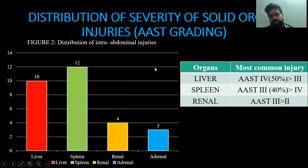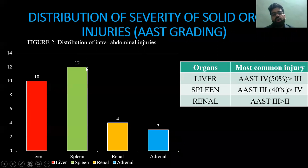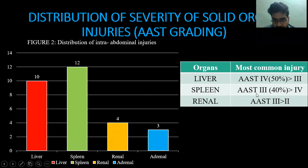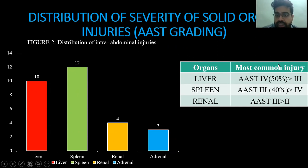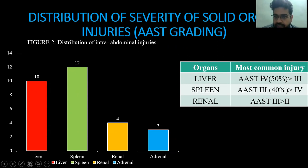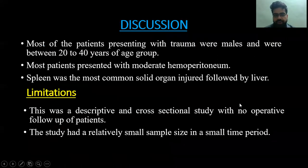In the distribution of severity of solid organ injuries, the most common organ involved was the spleen, followed by the liver. In liver injuries, the most common was AAST grade 4, accounting for 50% of all liver injury patients, followed by AAST grade 3. In splenic injuries, the most common grade was AAST grade 3, followed by grade 4, and then grade 2.